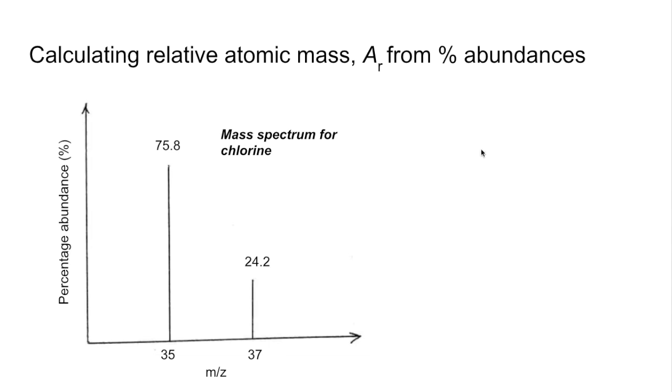So we've got the percentage abundance of the two isotopes. So 35 is 75.8% abundant and 37 is 24.2%. So the equation or formula we use is mass of the isotope times abundance, plus mass times abundance. Obviously if there's a third line on your spectrum, you just keep extending this formula here. And we're going to divide by the total abundance.